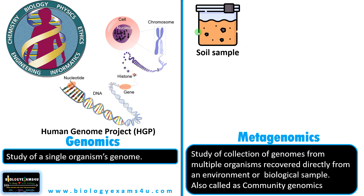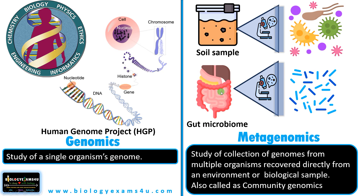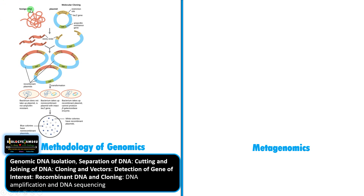From a soil sample, we isolate microorganisms, and the study of all these microbes constitutes metagenomics. Another example is the gut microbiome — isolating microbes from the gut, extracting DNA, and studying all the microorganisms present in the gut constitutes metagenomics.